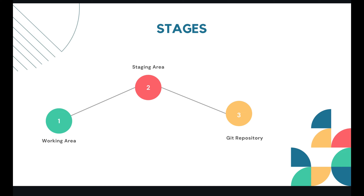The third stage is the git repository — the same .git folder we discussed, also called the local repo. This directory contains all changes, all records, and all history done as part of Git in your project. So we have three areas: working area (untracked), staging area (tracked), and the git directory (all records of tracking).